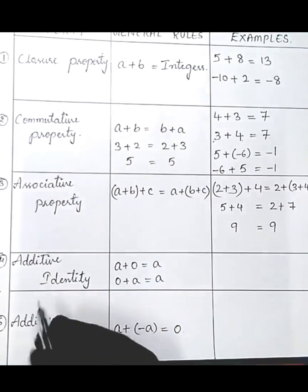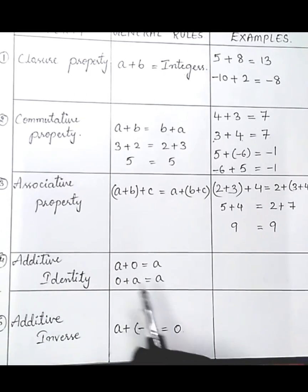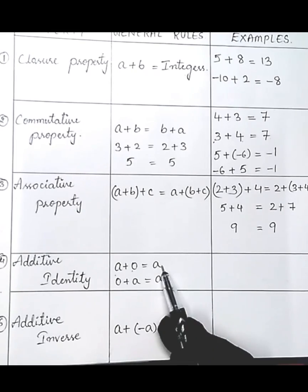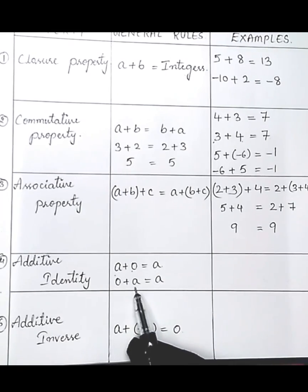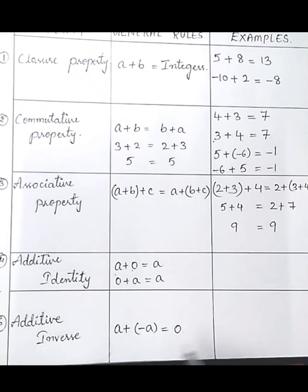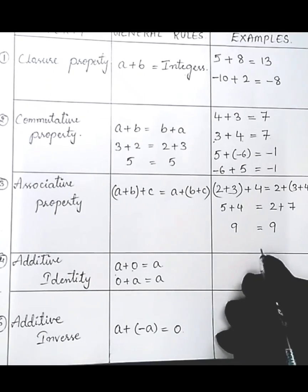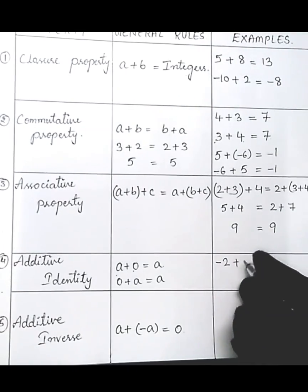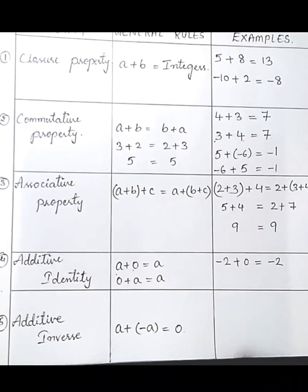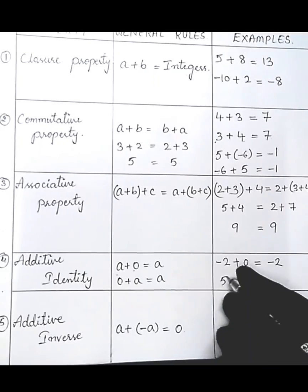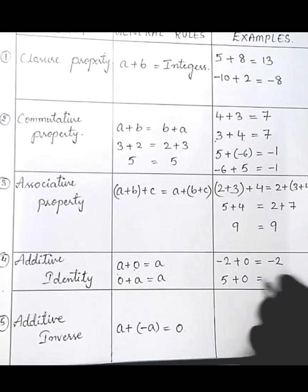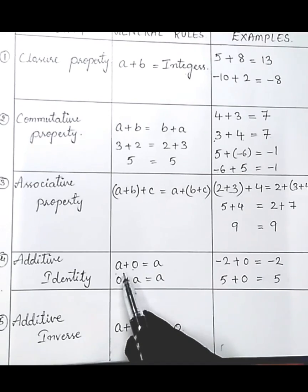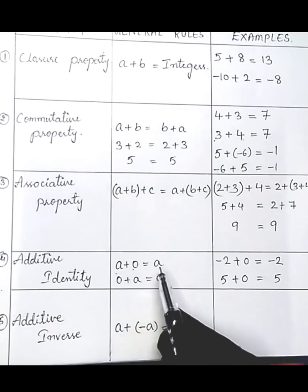The next property is additive identity. For this property, if there is an integer a, and you add 0 to it, you will get the same integer a. If you add 0 to any integer you get the same integer. For example, minus 2 is an integer — add 0 to it, we get minus 2. Five is an integer — add 0, we get 5. So additive identity means adding 0 gives the same integer.